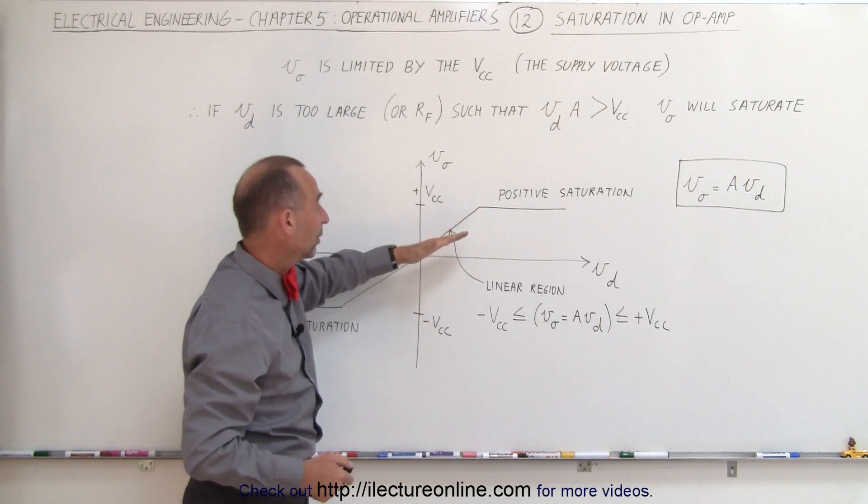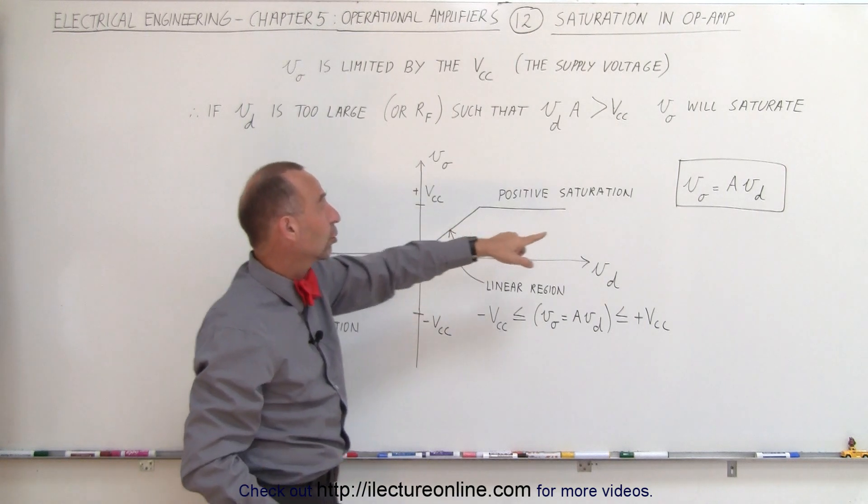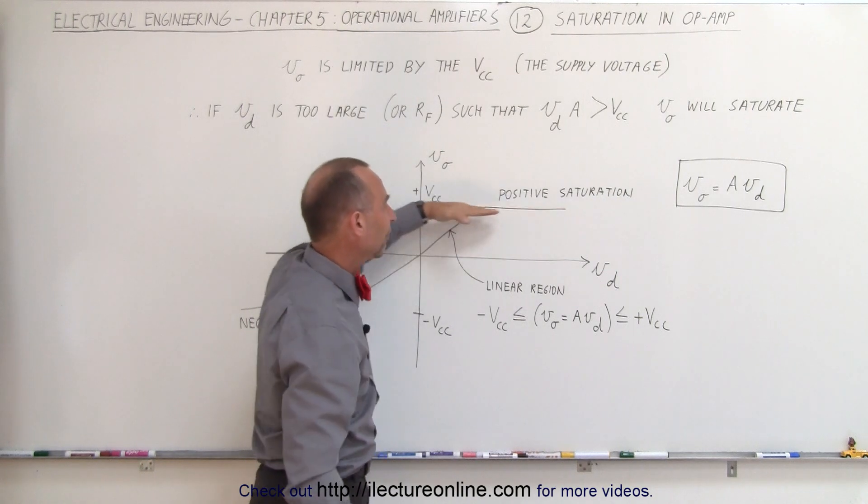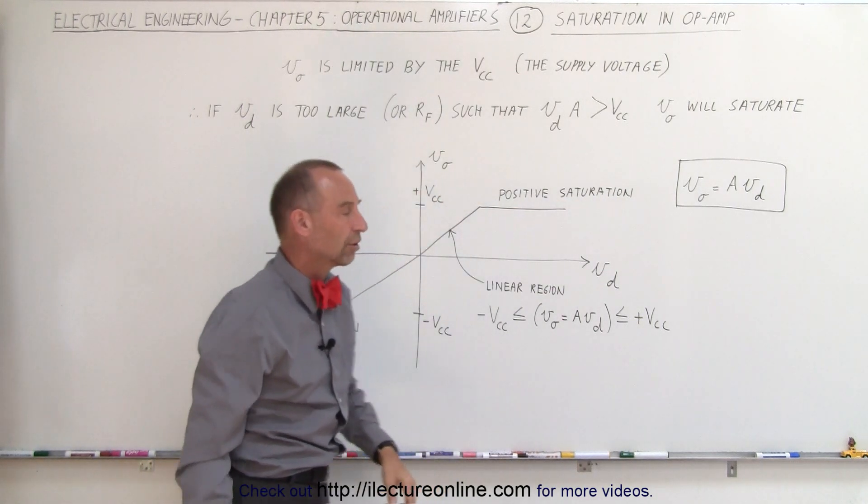And of course when the voltage gets to be too large and the output voltage tries to exceed the Vcc, then the linear region stops and now we simply have a flat line called the positive saturation line.